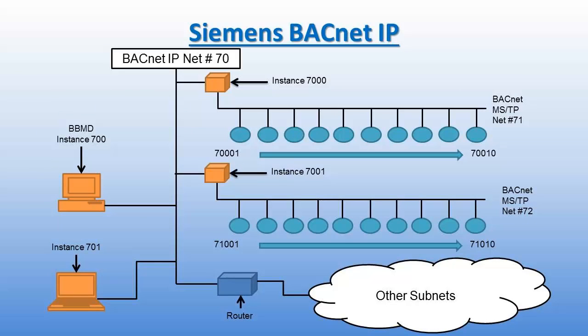This is the Siemens BACnet IP diagram, drawn up by a Siemens employee that maintains networks for HVAC. As you can see, there are many different instance numbers on a network — some for a router, some for a switch, and some for small controllers. The computer on the left-hand side, which has the instance number of 700, is configured to be a BBMD, which will be discussed in the next slide. As shown, there is both BACnet MSTP and BACnet IP present — BACnet IP is a subnet, and BACnet MSTP is a subnet of a subnet.